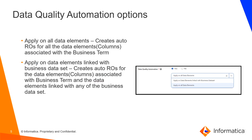Now we will see what DQ options are available in MCC to execute the rule template. There are two options using which auto ROs can be created. Depending upon the business use case, the user can select the appropriate option for DQ automation. The first option is apply on all data elements — by selecting this option, the rule template will create auto ROs for all data elements associated with the business term.